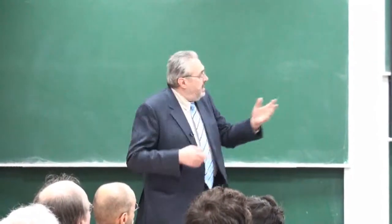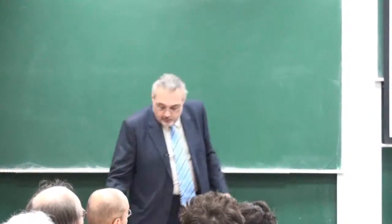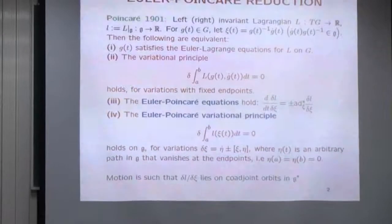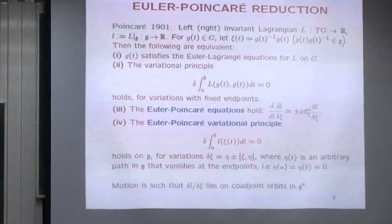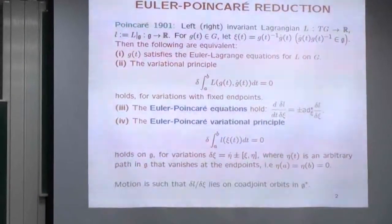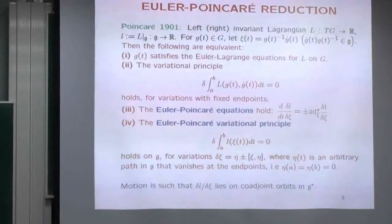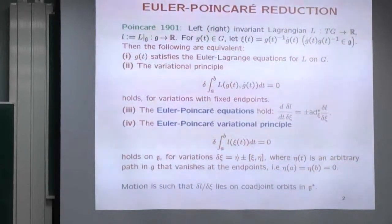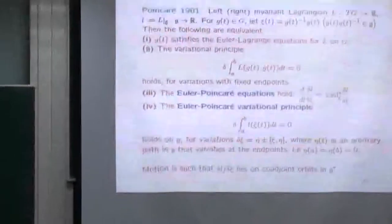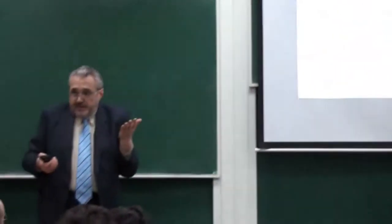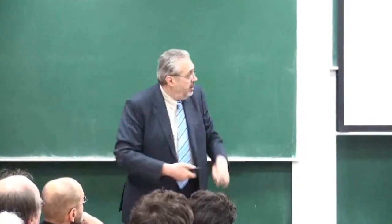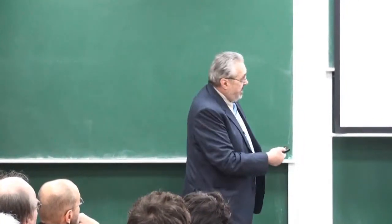Where does the constraint come from? When you do the variational principle you take curves g(t) and vary them keeping the endpoints fixed. You have another parameter moving the curves; take d/dε, you get another element in the tangent space to the group, bring it back to the identity and you get somebody in the algebra. Do you get everything? No — all you get is δξ = η̇ ± [ξ, η]. No more, no less. That's the point.